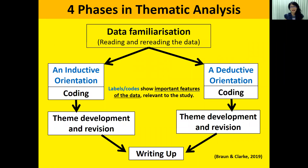There are four phases in thematic analysis according to Braun and Clark 2019. The first stage is data familiarization, where we read and reread the data in order to be familiar with the meanings in it. The later stages depend on whether we take an inductive or deductive orientation. The coding is the second step, whereby we label important features of the text with the themes. Theme development and revision depends on the orientation chosen, and finally, we write up the results.